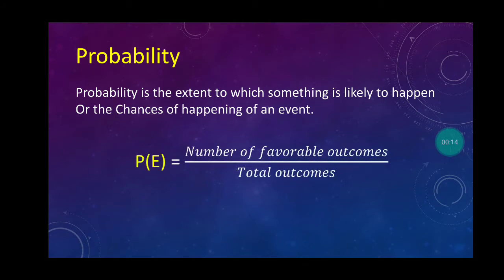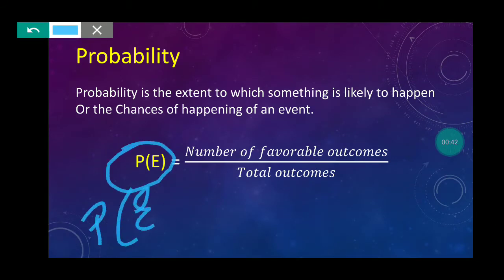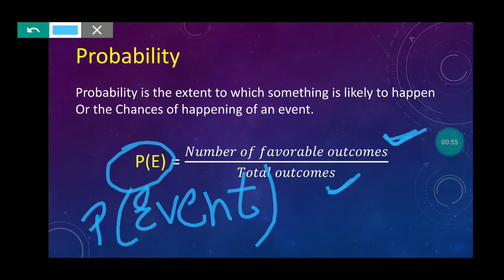Probability is the extent to which something is likely to happen or the chance of happening of an event. Probability kya hai? The chance that your wish will come true. To find out these chances, we use probability. The formula for finding probability is P(E), where P(E) means probability of event. Number of favorable outcomes upon total outcomes. Your wish happening divided by total possible outcomes.